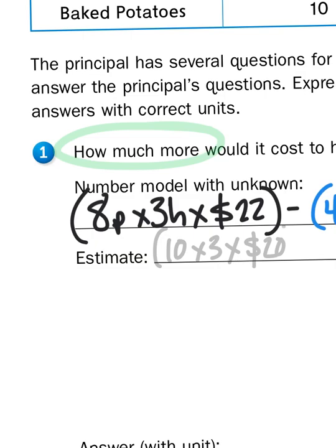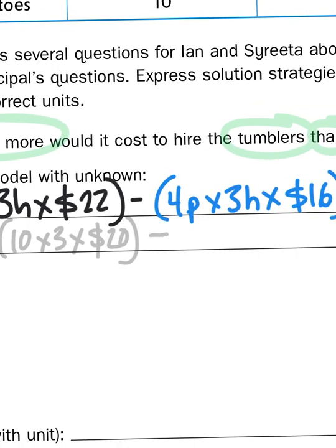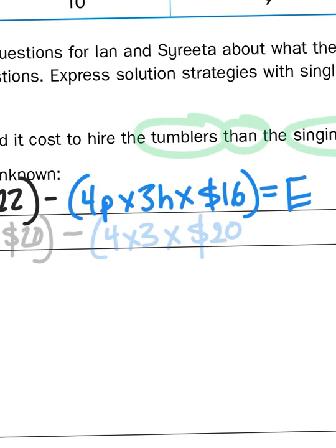So 10 people times 3 hours times $20, rounding down 22. And then I would subtract that from 4 people times 3 hours, because again, 4 and 3 are single digit numbers. That would round down to 0 if rounded to the nearest 10. Then I'll just multiply that amount by $20. 16 rounded up would go to 20.